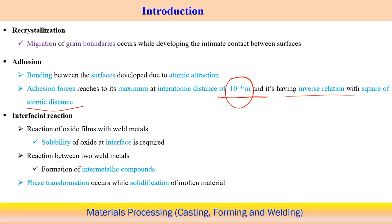In interfacial reaction, oxide films react with the base metal, creating strong oxide layers; solubility of the oxide at the interface is also required. Reaction between the two base metals can form inter-metallic compounds, which bond the components at solid state temperatures. Phase transformation involving solidification of molten material is another form of interfacial bonding, though that is outside our main scope.